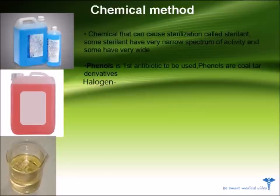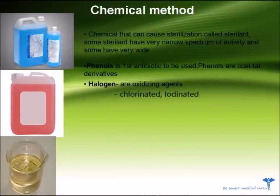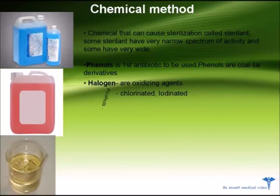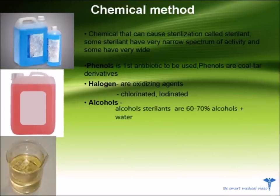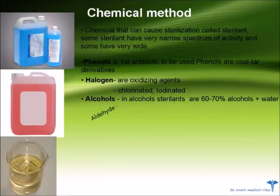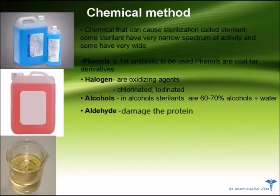Halogen. Halogen sterilants are oxidizing agents, like chlorinated and iodinated compounds. Alcohols — alcohol sterilants are 60 to 70% alcohols and water. Aldehyde — aldehyde damages the protein.